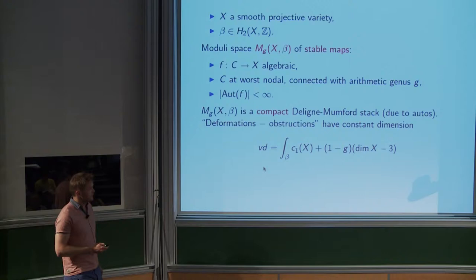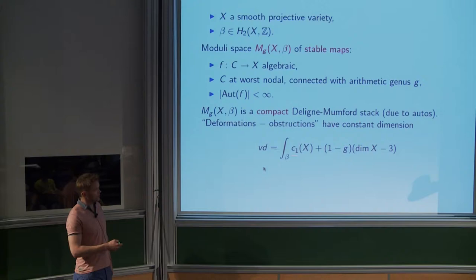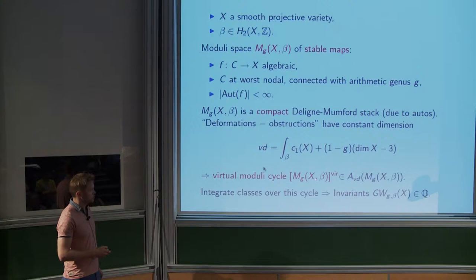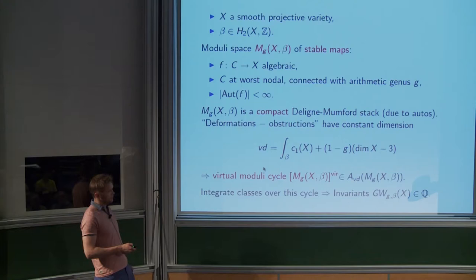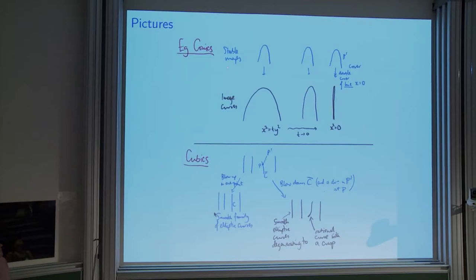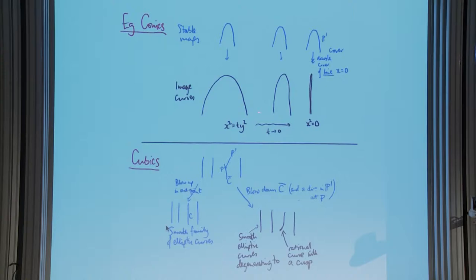Roughly, the space is cut out by a bunch of equations in a bunch of unknowns, and the difference between the two is constant. In general the moduli space has too high a dimension, but you can get a cycle of actual dimension, done by Li-Tian and Behrend-Fantechi, proposed by Maxim. This is called the virtual moduli cycle. You use this cycle, integrate against it, and get Gromov-Witten invariants — rational numbers because of these automorphisms.